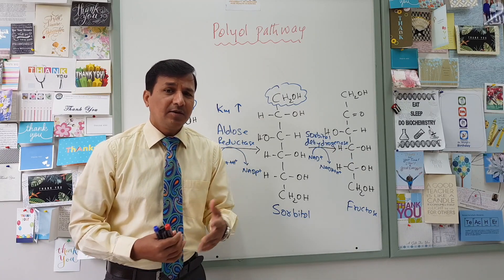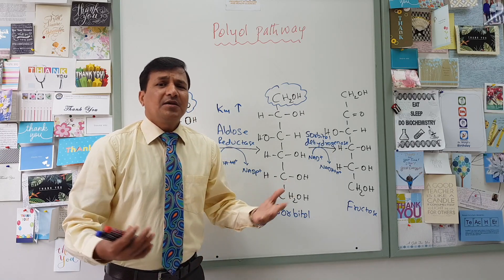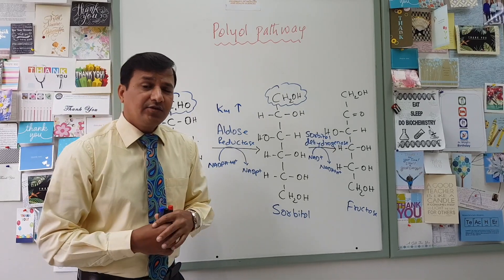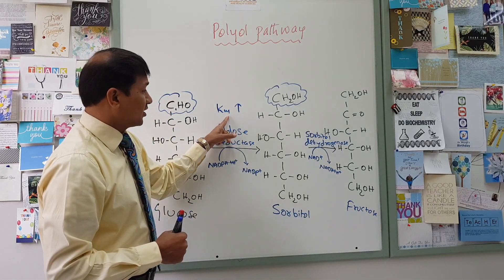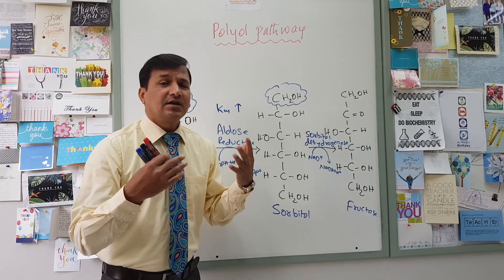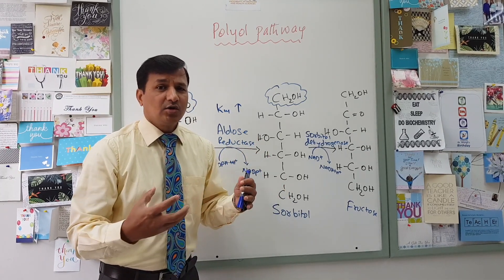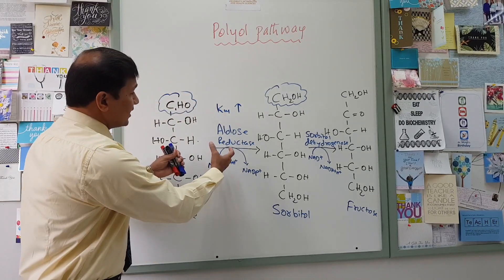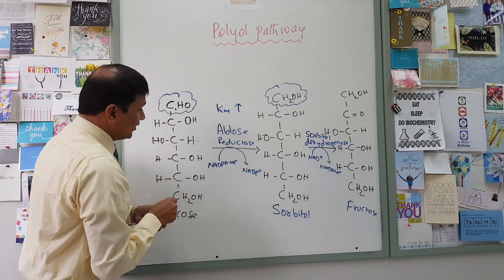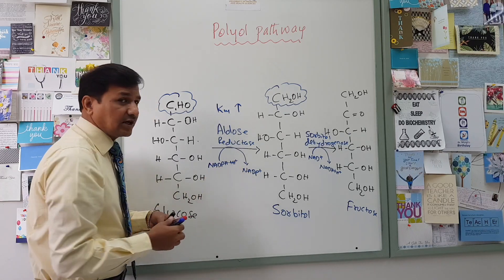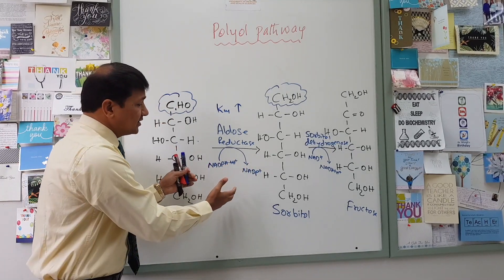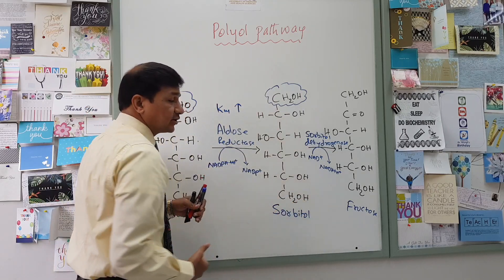This elevated aldose reductase activity can be seen in type 1 or type 2 diabetes mellitus, or under well-fed conditions after a carbohydrate-rich meal. Aldose reductase reduces the aldehyde group into an alcohol group, and the reducing molecule it uses is NADPH + H⁺, which is converted to NADP⁺. While NADPH is oxidized, glucose is reduced into sorbitol.